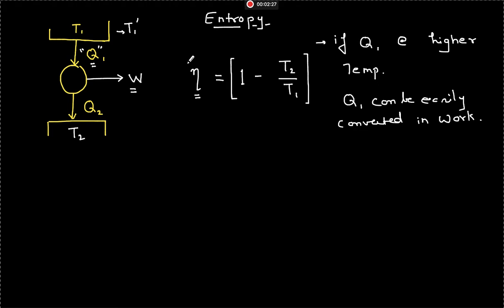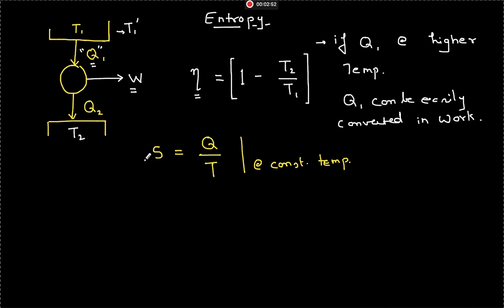Basically, entropy is a quantification of how much randomness the system has. If one has to quantify entropy, it will be heat absorbed divided by temperature, if it is happening at constant temperature. This is basically the change in entropy — if you are absorbing Q amount of heat at a temperature T, the increase in entropy will be Q by T. If T is lower, then the increase in entropy will be higher. So whatever heat you are absorbing, most of it gets utilized to increase the entropy of the system, and a lesser amount is utilized to give work.